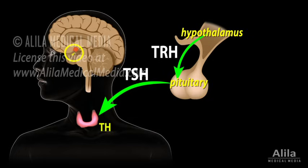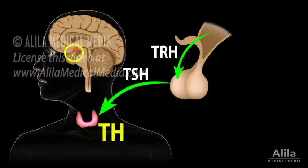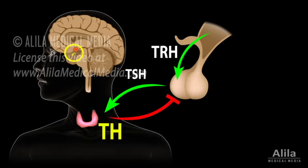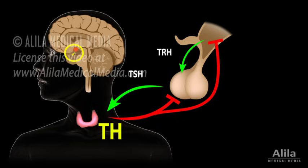The amount of circulating thyroid hormones is regulated by a negative feedback loop. When their levels are too high, they suppress the production of TSH and TRH, consequently inhibiting their own production.